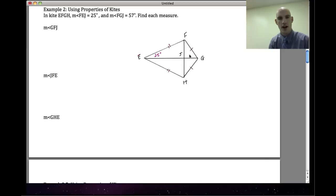And the measure of FGJ is 57 degrees. So far, if we have a kite, we can go ahead and mark these angles congruent. So I know that this angle here is congruent to this angle here—so GFE is congruent to GHE. That's what I know so far.